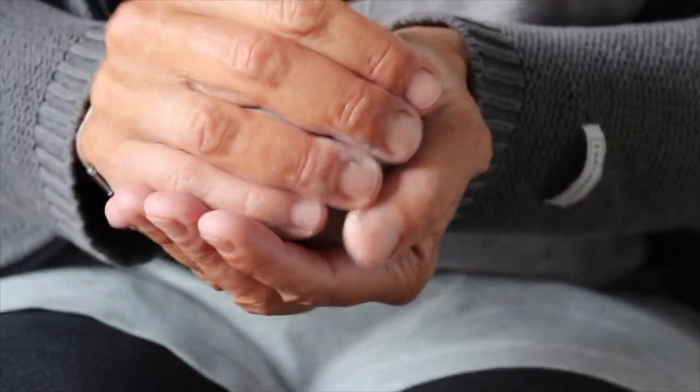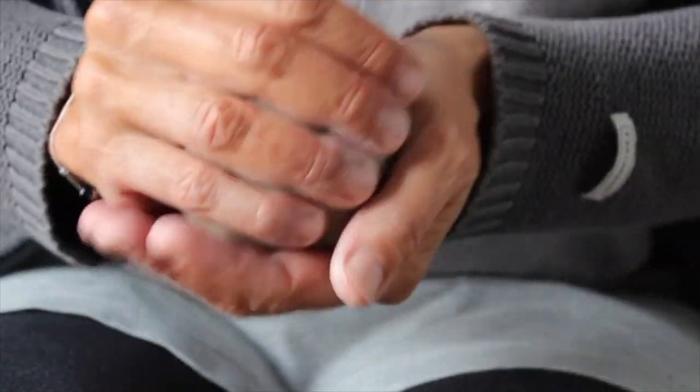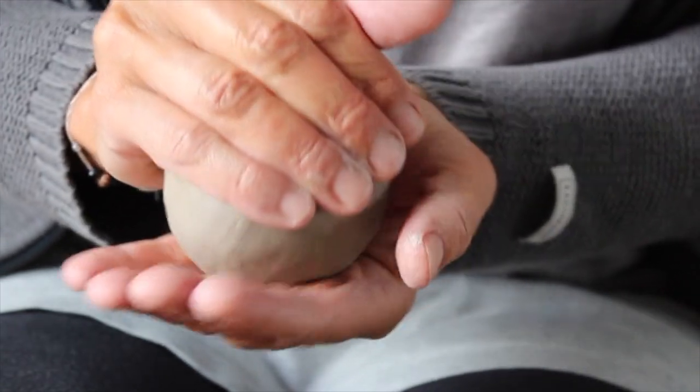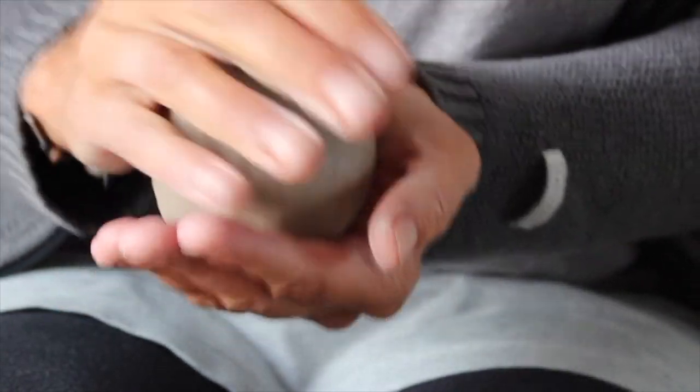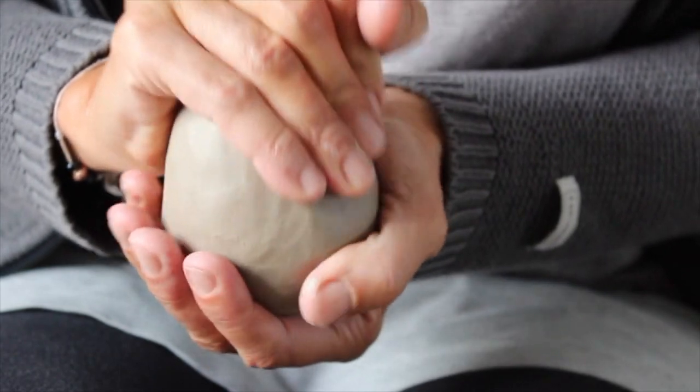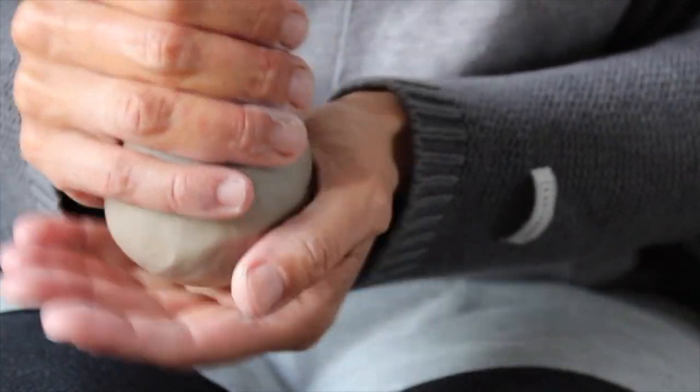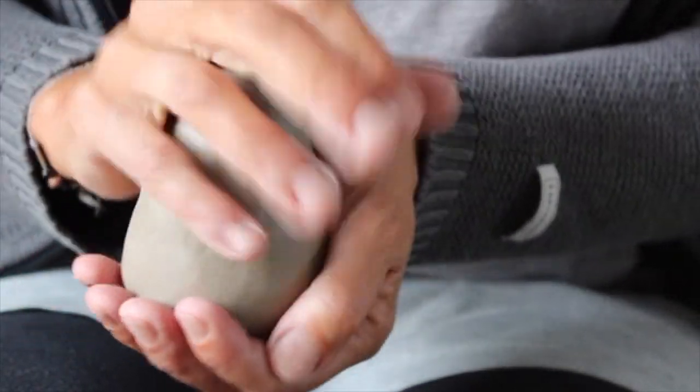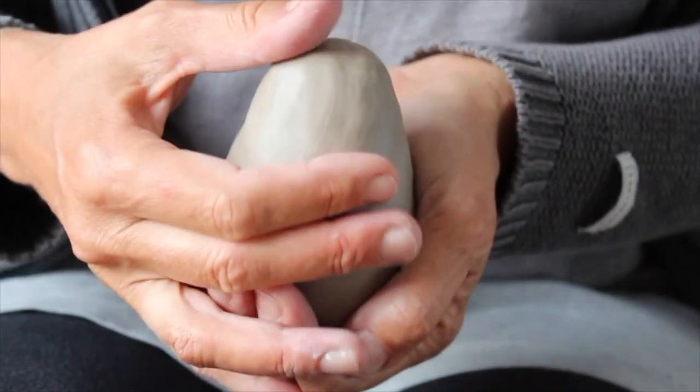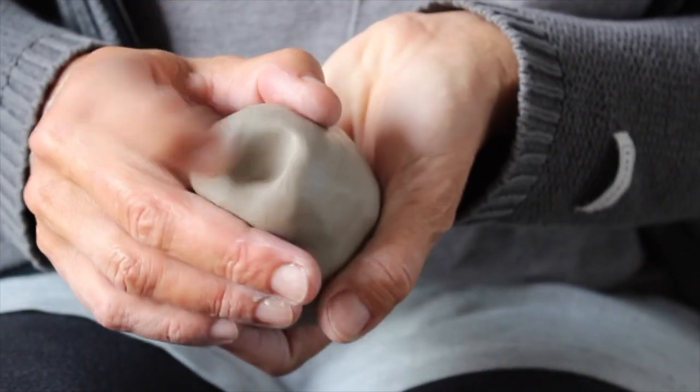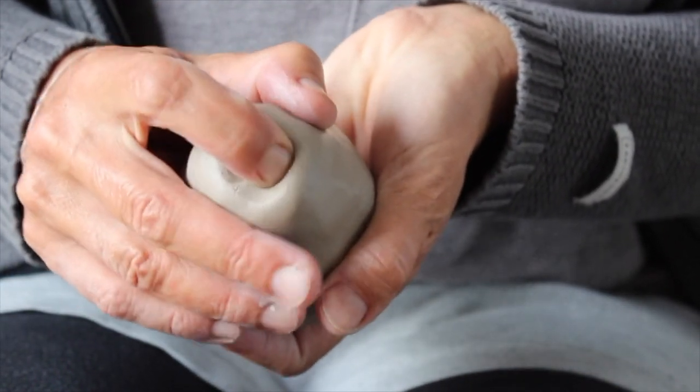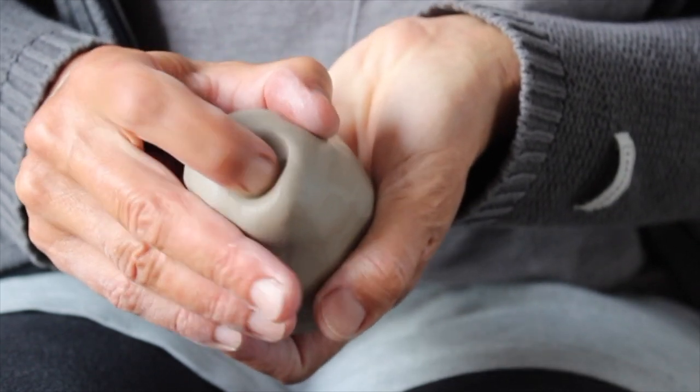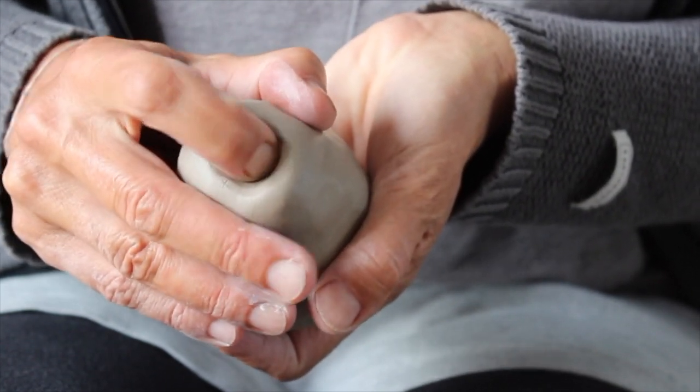Then you start pulling the top side of the ball out to create an egg. Press from the top and the bottom into the egg till your fingers can touch each other.